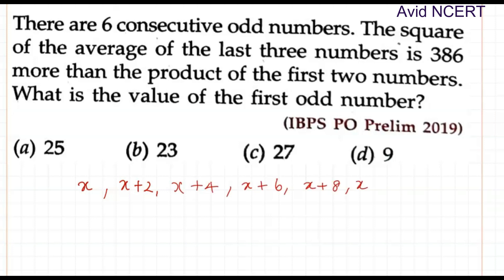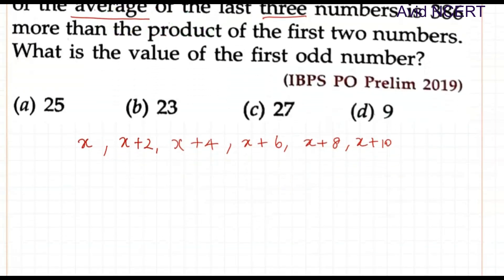The next sentence is 'the square of the average.' Whenever it is said as average, we have to divide it by the total number of terms. Of the last three numbers, so we are taking the last three, and since it is mentioned as three, we are dividing it by 3.